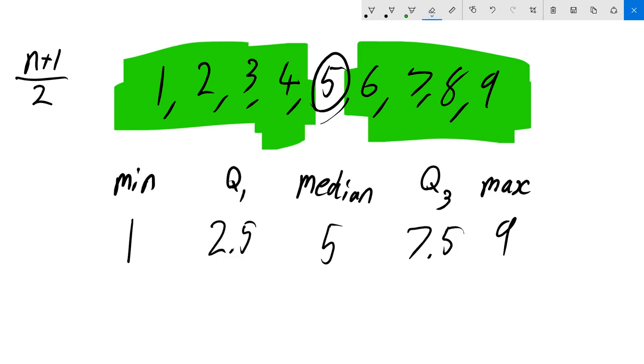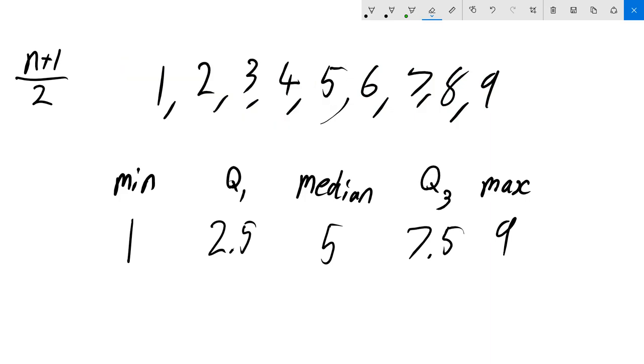So now I want to talk about a little bit of measure of spread that we can find from the five number summary. So the measure of spread that I'm talking about is something called the interquartile range or IQR for short. And this IQR is the third quartile minus the first quartile. So in this case it's going to be 7.5 minus 2.5, and it's going to equal 5.